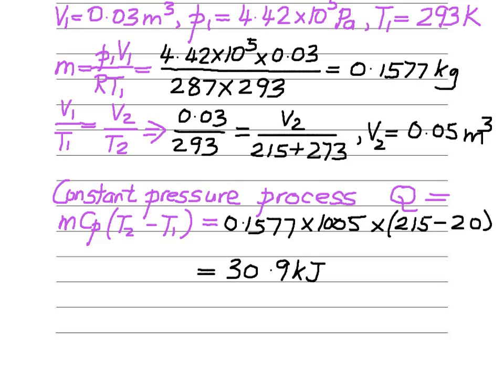Finally, for a constant pressure process, the heat transfer is given by mCp(T2 minus T1), substituting in the values which we got earlier. The mass, 0.1577, then the data for specific heat at constant pressure and the difference in temperature, we get our final answer.